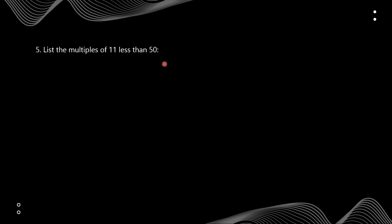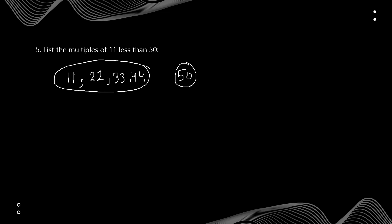This question asks us to list the multiples of 11 that are less than 50. We write the table of 11: 11, 22, 33, 44. The next one is 55, but 55 is greater than 50. So the multiples of 11 less than 50 are 11, 22, 33, and 44.